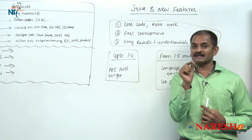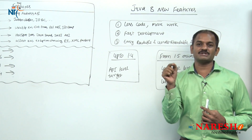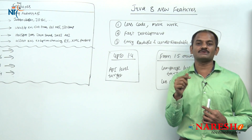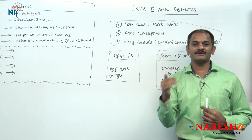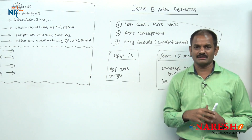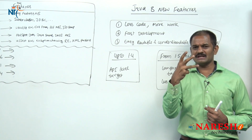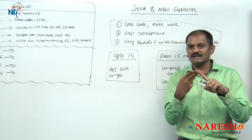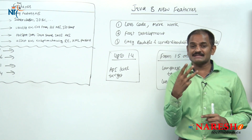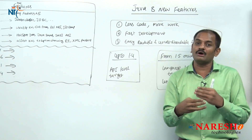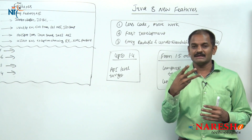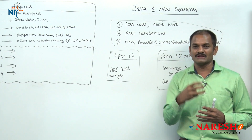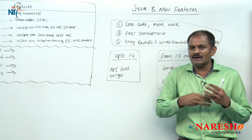Carefully observe those three lines of code: obtaining the iterator object, checking if an element is available, retrieving the element from the collection — these three lines are common to all programmers. I call this syntax-level code. These three lines are common to all programmers, so who has to write them? Sun Microsystems has to write them.